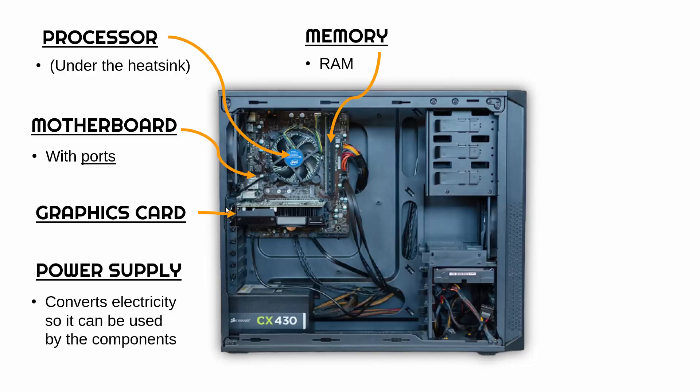The power supply is needed to get power to all of your components. It's quite important because it converts electricity from AC — alternating current — to DC, direct current. Your components can only use direct current. So it's important it can convert it to a form which your components can use. It'll also regulate it and only provide what is needed to the components.